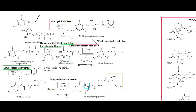Through GTP cyclohydrolase 1 we generate this 7,8-dihydroneopterin triphosphate. Then we have dihydroneopterin hydrolase which removes the triphosphate and gives us a hydroxyl group, and dihydroneopterin aldolase which removes that portion, releasing glycolaldehyde.